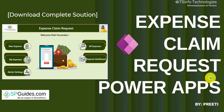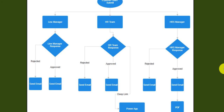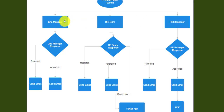First I'll tell you about the approvals throughout the process. There are three levels of approval: Line Manager, HR Team, and HRS Manager. The user submits a new expense claim — you can also submit multiple claims through the process. The Line Manager is selected by the specific user. The HR Team can have multiple people, meaning the claim can be approved by any one of them. HRS Manager also has multiple people for the final approval.